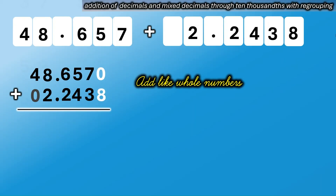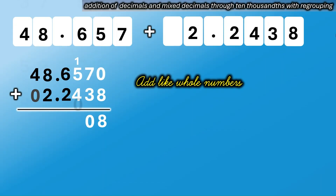0 plus 8 equals 8. 7 plus 3 equals 10 — regroup: bring down 0, carry 1 to the next column to the left. 1 plus 5 equals 6, plus 4 equals 10 — regroup: bring down 0, carry 1 to the next column to the left.